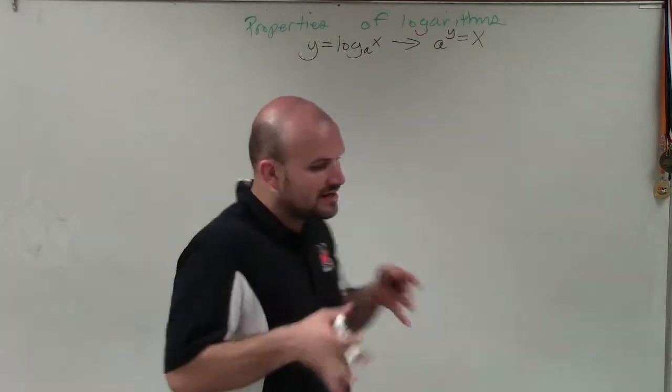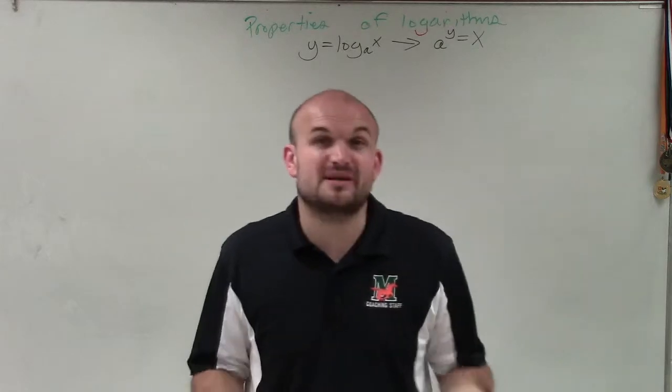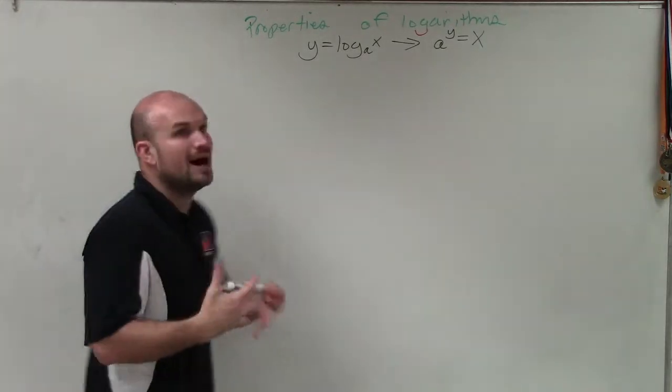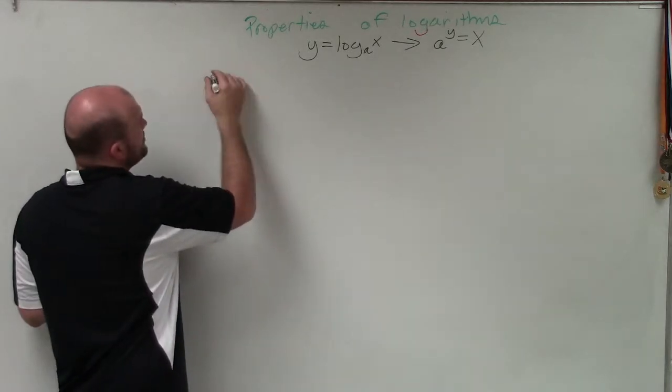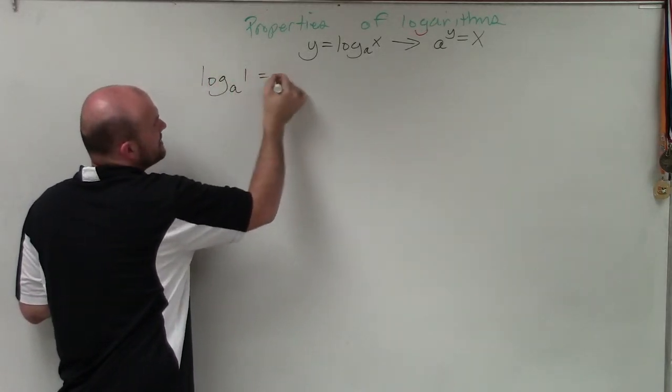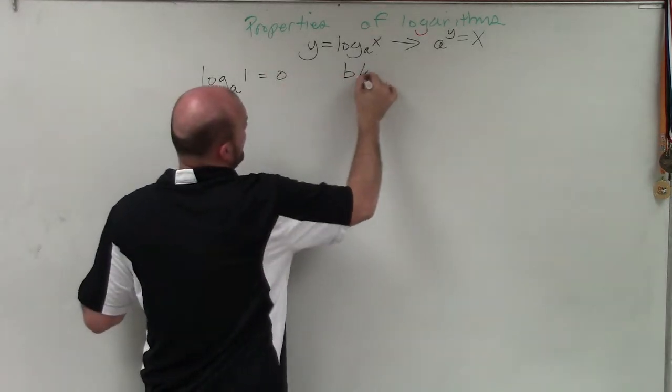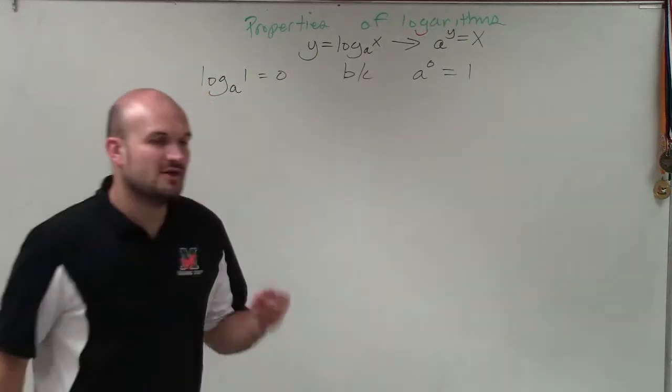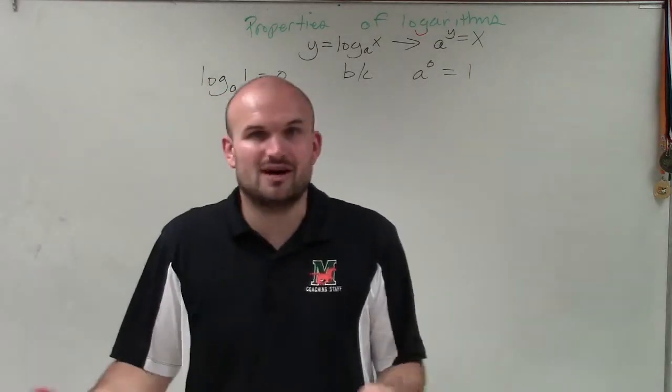Now there's kind of two fundamental properties that we need to make sure we understand about logarithms. And I'm going to kind of explain why those logarithms work. The first one is log base a of 1 is equal to 0. And the reason why that works is because a raised to the 0 power equals 1. So I can rewrite this in exponential form. You can see, oh yeah, it makes sense.